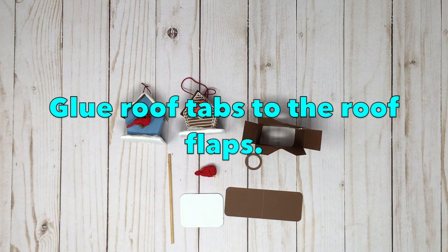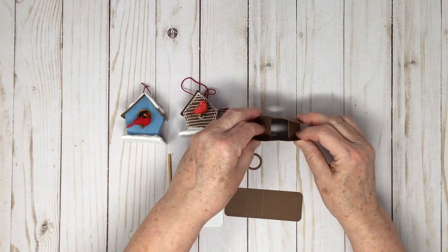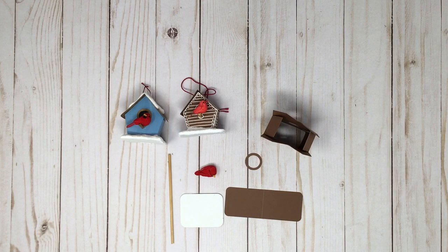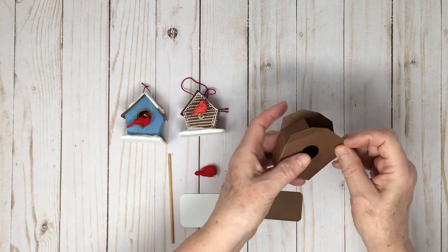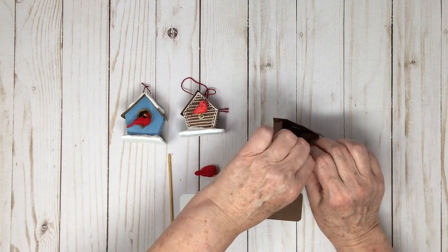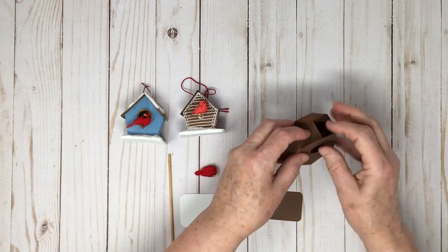Now we want to glue on what I call the roof flaps and the roof tabs. These are the roof flaps and they help maintain the structure of the little birdhouse. They go in and then these are the roof tabs. Whatever I call a tab means to glue it. Roof tabs glue to the roof flaps.